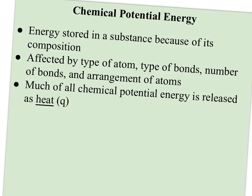Chemical potential energy is stored in a substance because of its composition, and it's affected by the type of atom, the type of bond or bonds, the number of bonds, and the arrangement of atoms. So there's a lot of things that are going to affect the chemical potential energy of different foods. When you talk about simple sugars or complex carbohydrates, you're talking about how much energy and how easily that energy is released. Much of all chemical potential energy ends up being released as heat.